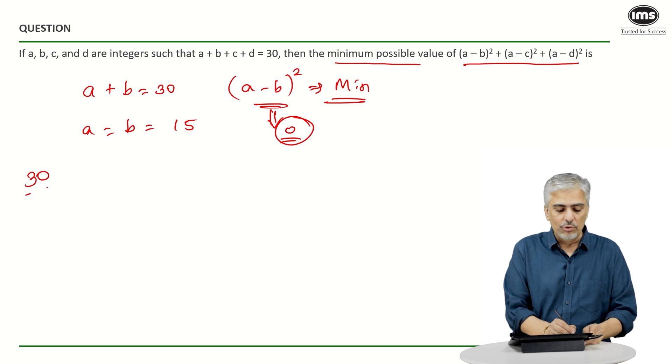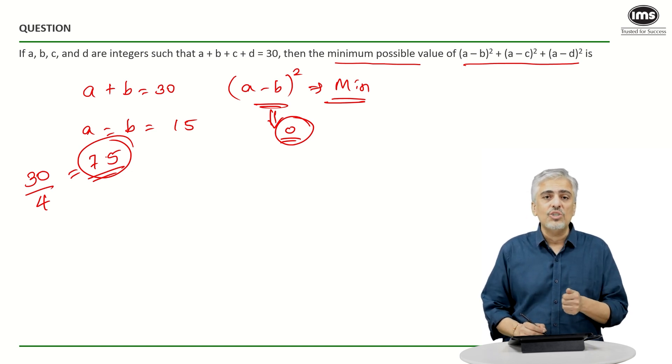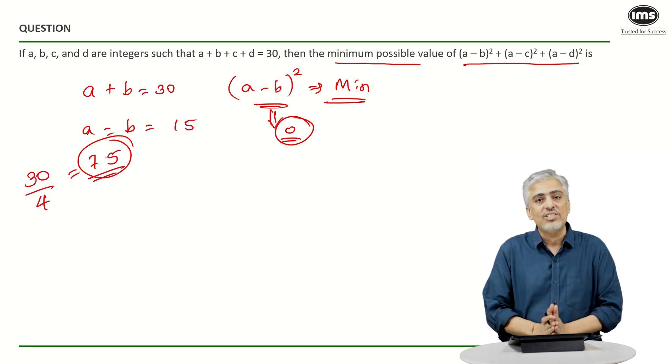If I divide 30 by 4, I get a 7.5. Right? So, but 7.5 is not an integer. So, I can't take that. So, I now need to take the values in such a way that they are as close as possible, but they are integers.